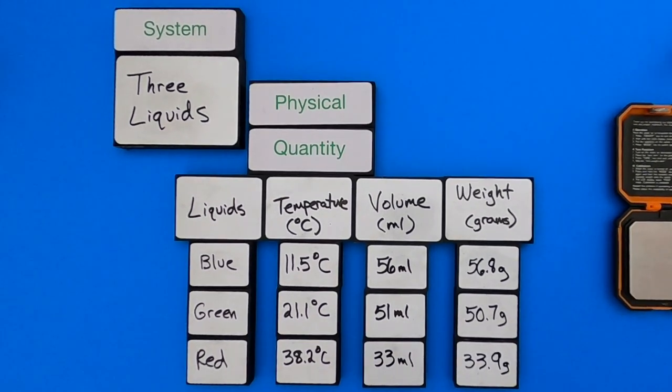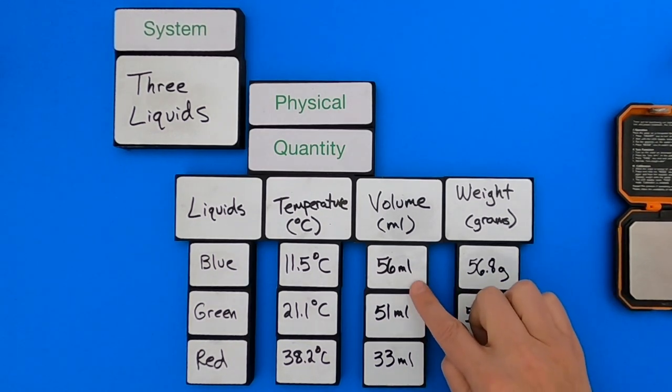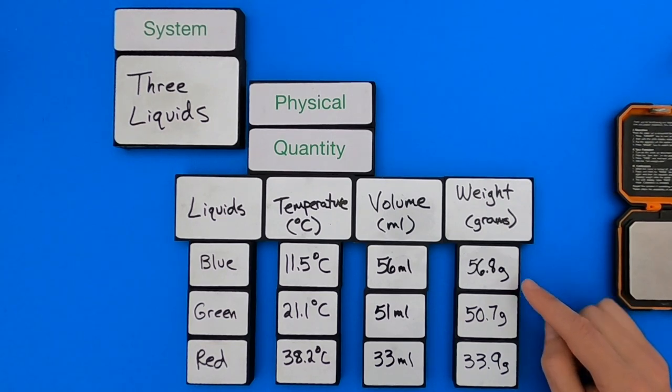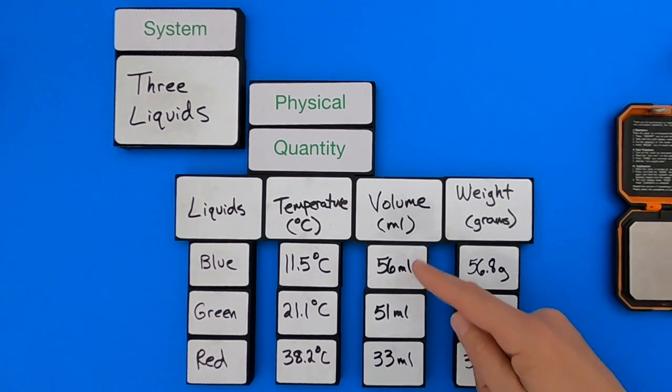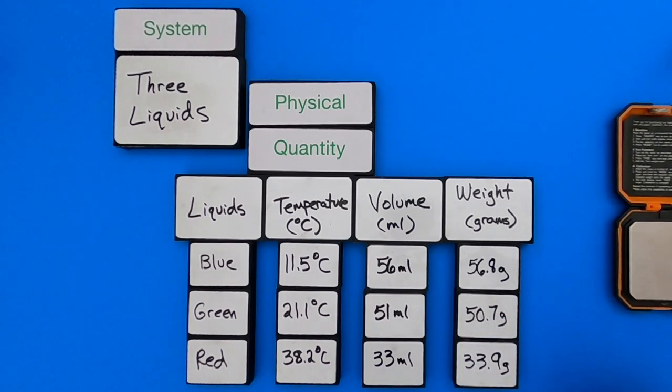Okay, so the physical quantities that I measured of weight are really close to the volume if you look at that. So this is 56 milliliters, this is 56.8 grams, 51, 50.7, and 33 and 33.9. So it's not just coincidence, I was really careful in my measurements of both volume and weight, and so we're finding a relationship between those two. So what is a physical quantity again? It tells you not only what are we measuring, but what are the units that we're measuring, and how much of it do we have.